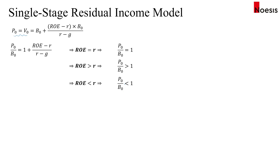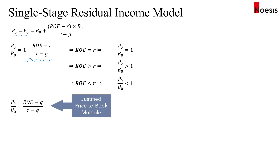If you simplify this formula, it becomes (ROE minus G) divided by (R minus G). This is the justified price-to-book multiple formula also seen in the reading on the market-based approach — the two formulas are equivalent.